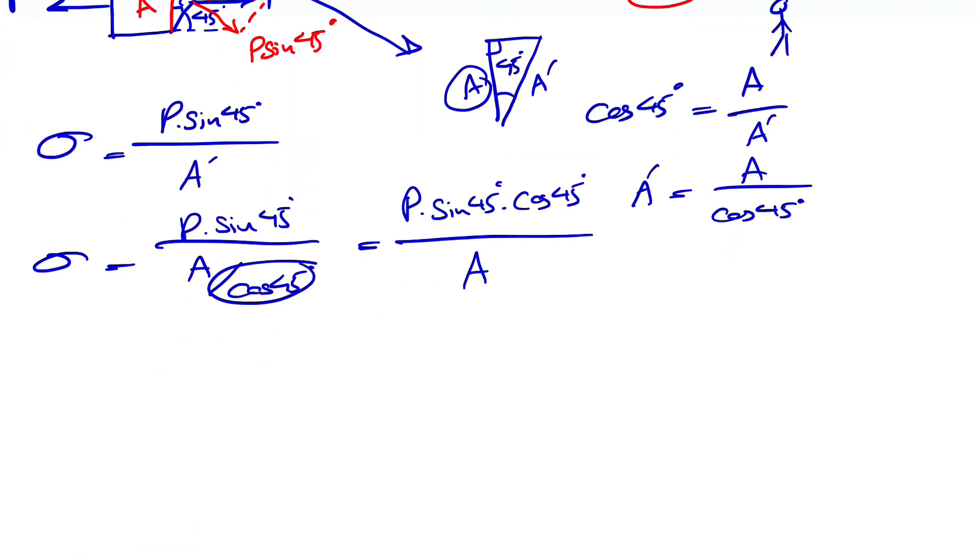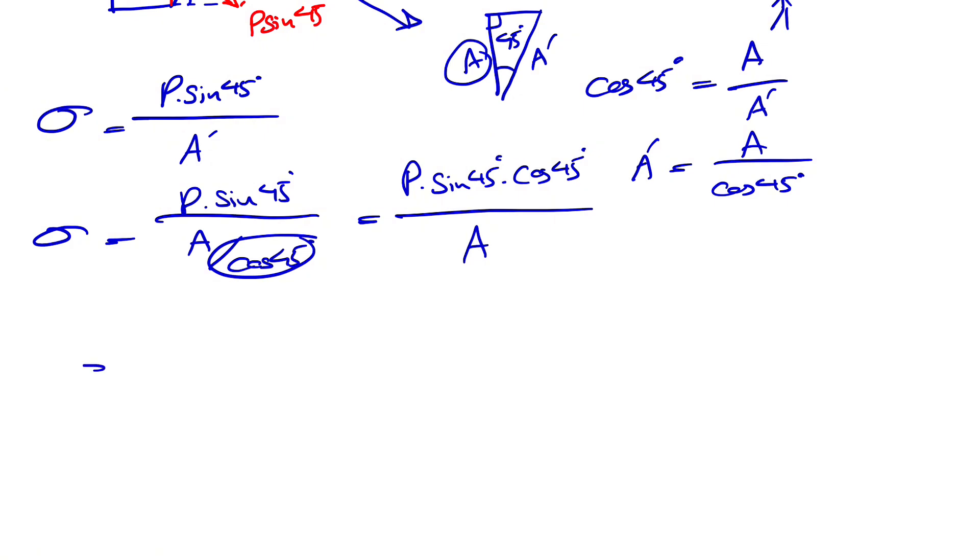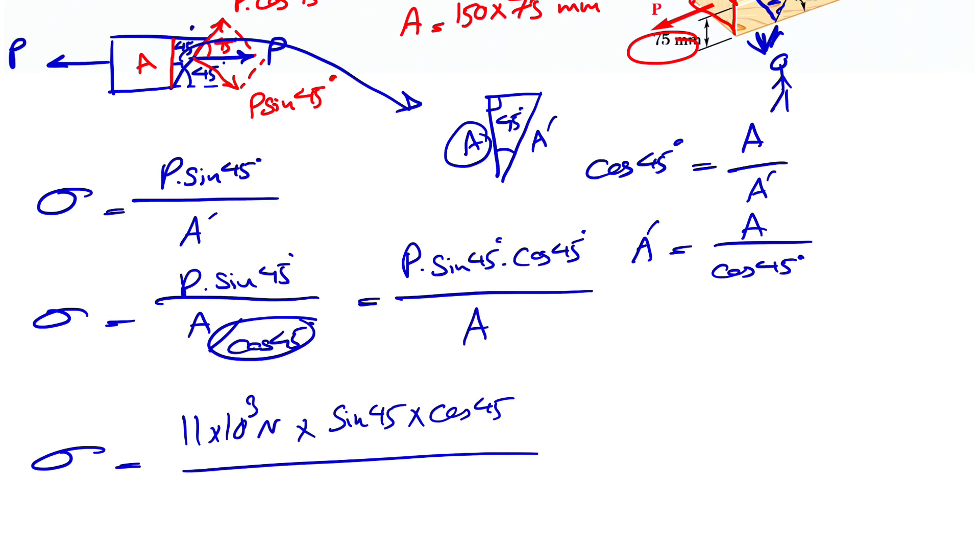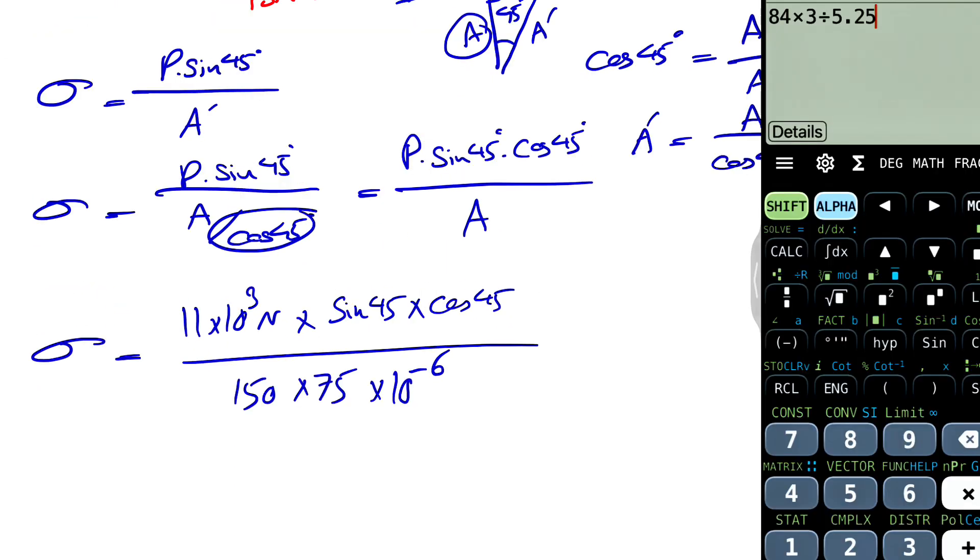We know the value for sine and cosine of 45 degrees is the same. So it doesn't matter if you pick the other 45 degrees, it's going to switch these two in here, but same answer at the end. So let's calculate the force. We know that P is 11 kilonewton, so 11 times 1,000 newtons times sine of 45 times cosine of 45 divided by our A, which we already figured is 150 times 75, and that's millimeter. If we want to have it in meter, we have 10 to the minus 6. This is actually millimeter squared. So yeah, let's figure this out.